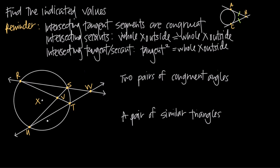So we have two secant lines that intersect one another outside the circle. The portion of secant line RW inside the circle is RS, and the portion outside is SW. So RS times SW must equal the same product for the other secant line: the portion inside the circle is chord UT, and the portion outside is TW. So RS × SW = UT × TW. This is the real relationship between intersecting secants.